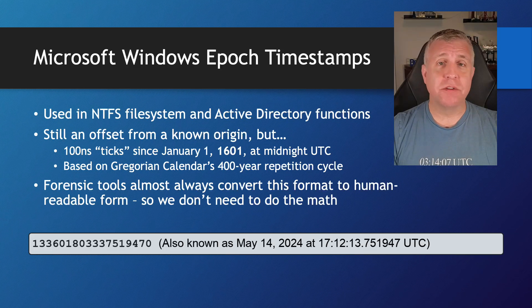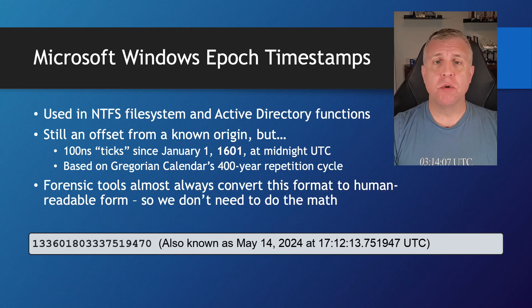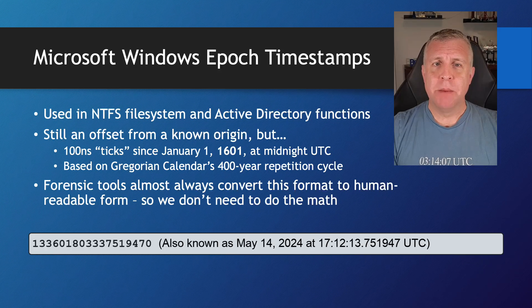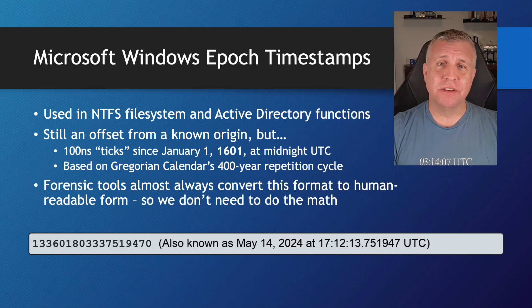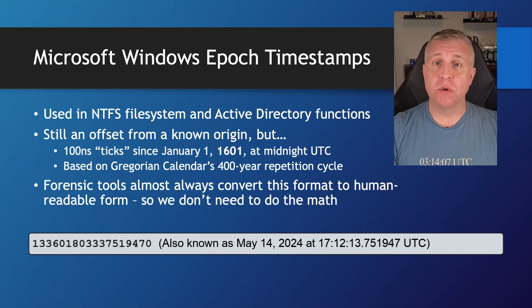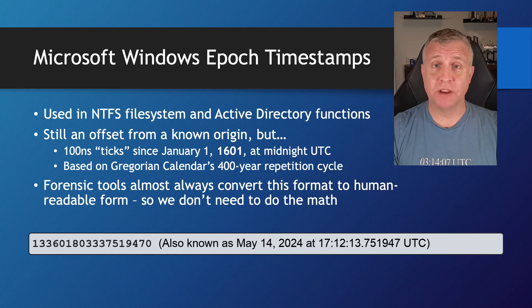As for why it's in 100-nanosecond increments, that goes beyond the scope of what we can cover here — it's a very low-level computing design decision, but it's a really cool rabbit hole to chase if this interests you. From a DFIR perspective, you're probably not going to encounter this in its native form; it's not typically used in any kind of logs. The good news is that any tools we have that parse this out of Active Directory or file system artifacts will typically convert those back into human-readable format before it's presented to us. But it is still important to know this is a real timestamp very commonly used in forensic practices.